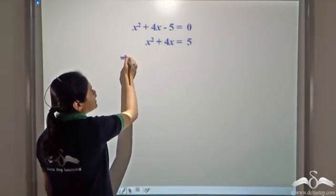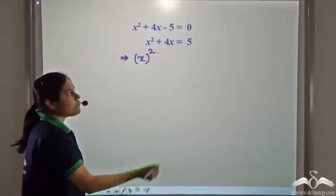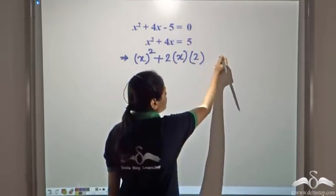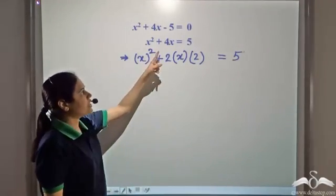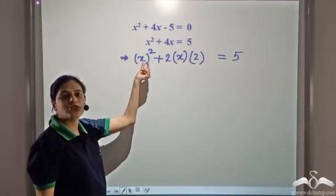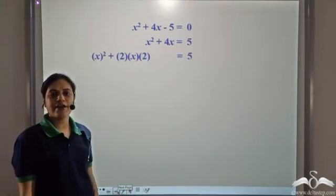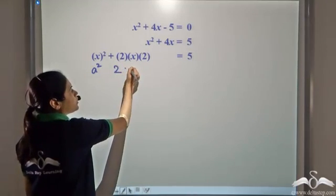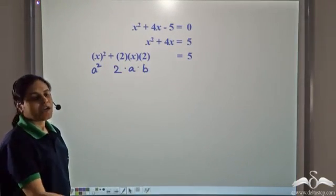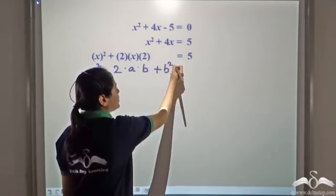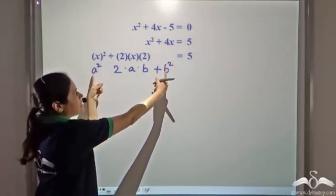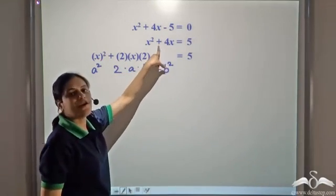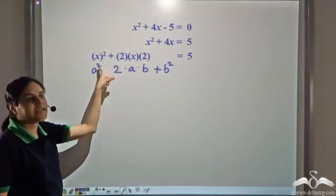Now this is x whole square. 4x can be written as 2 into x into 2. This is in the form of 2 into a into b. If we have a b squared term here, then we can represent the left hand side as a plus b whole square. We already have an a squared term and a 2ab term, so if we have a b squared term we can complete the square.